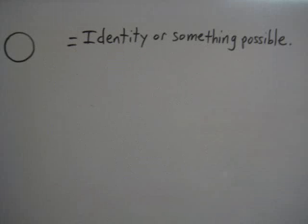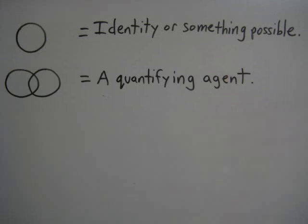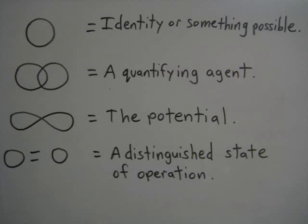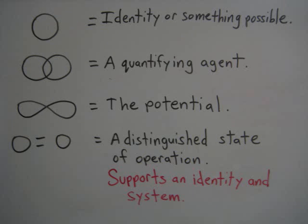All identity will always define the relationships that make it possible. Interaction can be thought of as a quantifying agent that stabilizes relationships to the potential, so that there is a distinguished state of operation.